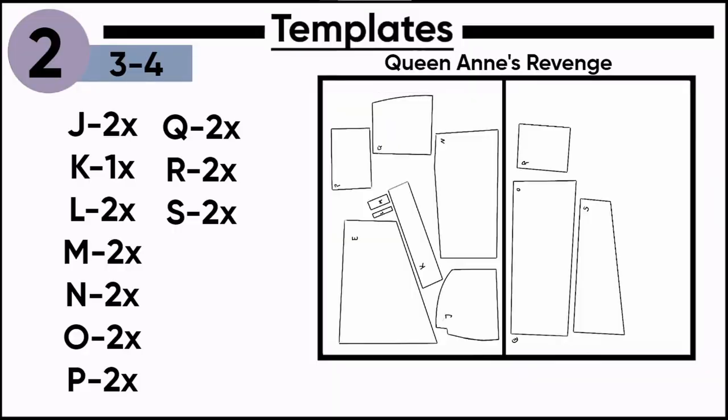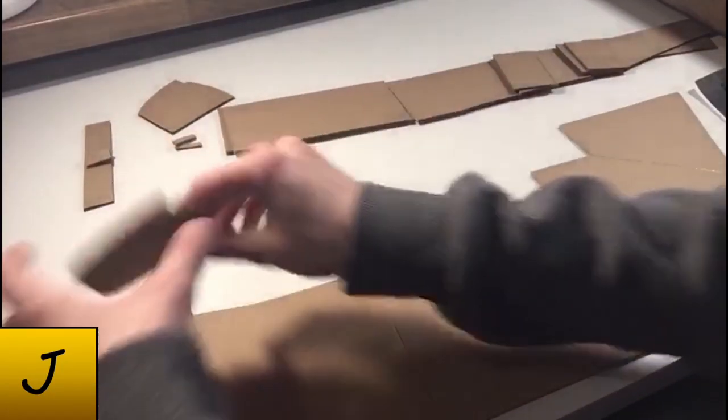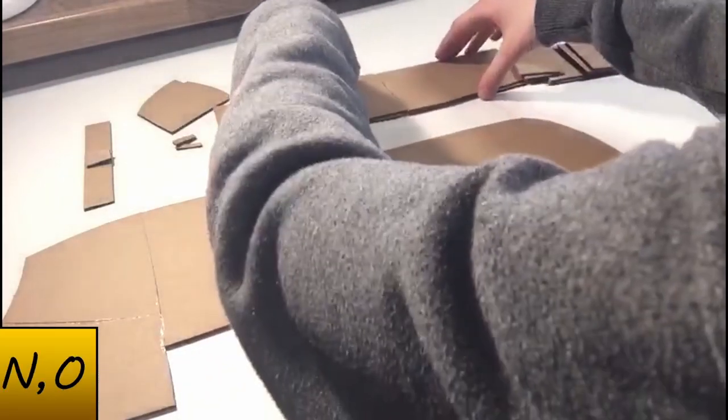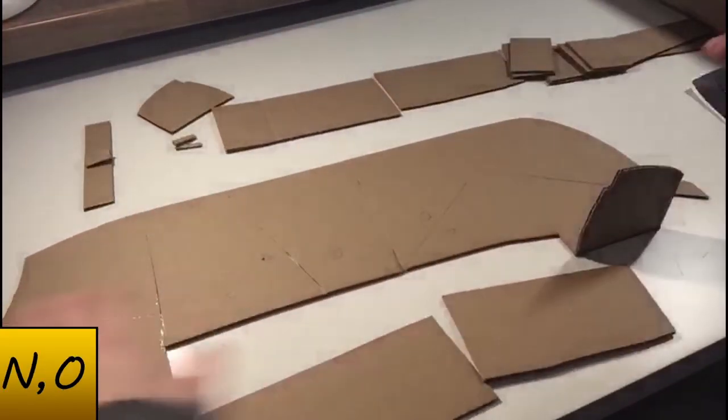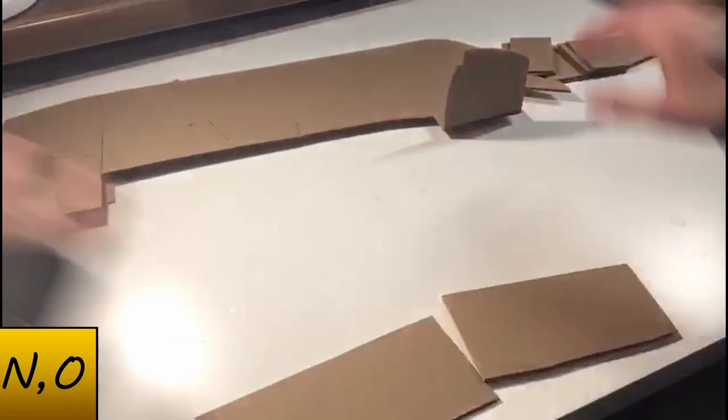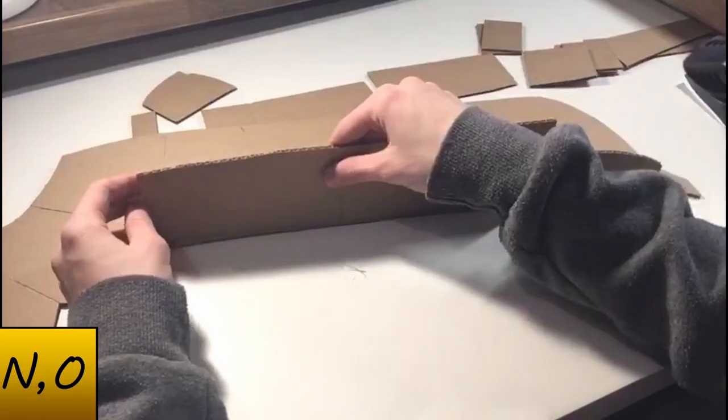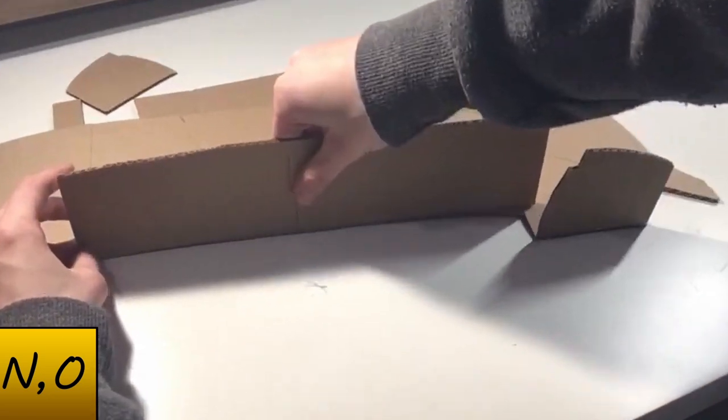Now we need the sides 3 and 4. Glue like in the video, everything should be vertical. First glue one side completely and then mirror it to the other side. Bend the cardboard to fit the shape.